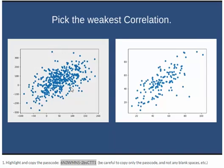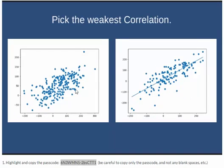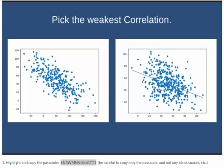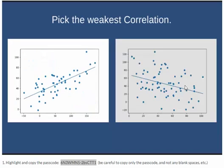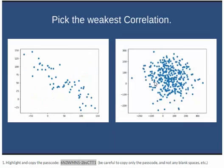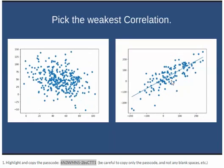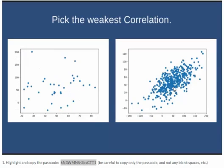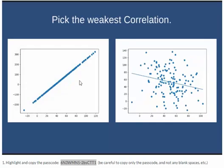We're looking at two scatter plots and want to click on the one that indicates the weakest correlation. A weak scatter plot is going to be one that's scattered around like a cloud. The more that the points fall along a line, the stronger the correlation. The more scattered it is, the weaker.